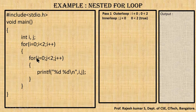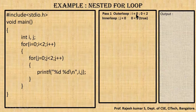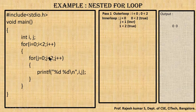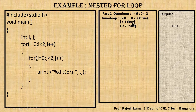We enter the inner for loop, initialize j to zero, and check: zero less than two — true. The statement executes: we print i and j. Initially i is zero and j is zero, so '0 0' is printed on the output screen. After printing, j increments to one. We check: one less than two — true. We execute the inner for loop statement again. The i value remains zero while j is now one, so we print '0 1'.